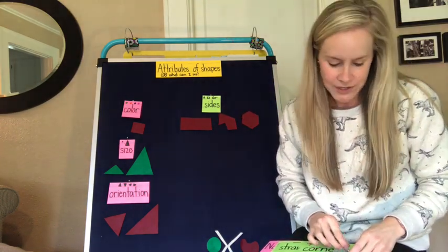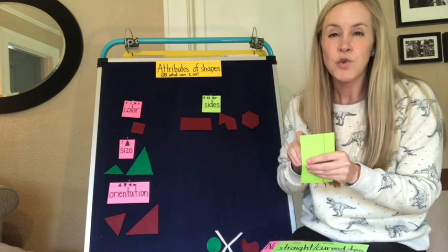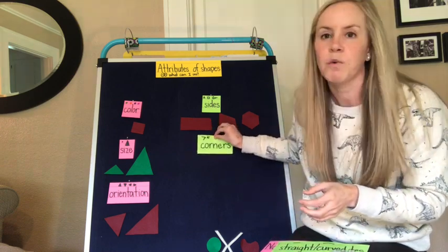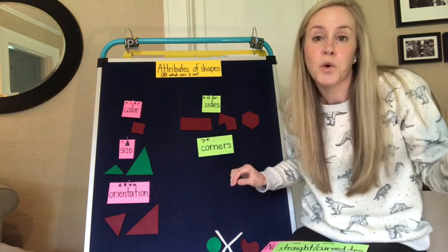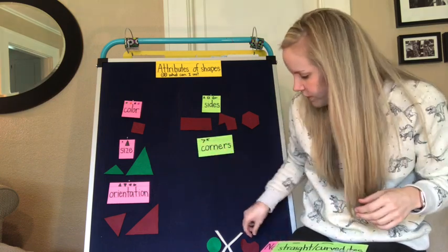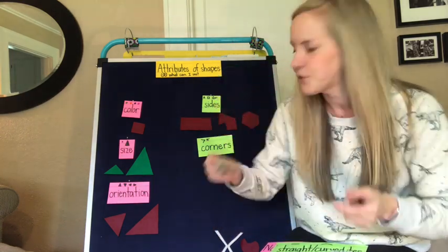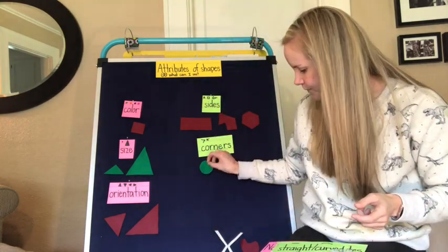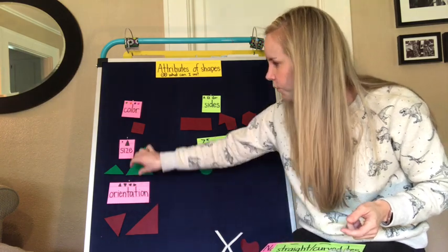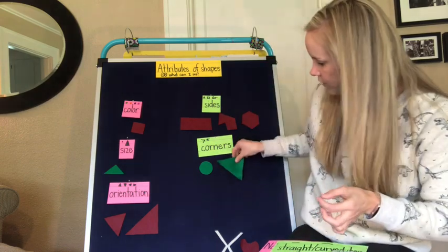Another attribute is corners. Normally corners goes along with sides — however many corners a shape has is how many sides it has too. For instance, this circle has zero corners. This triangle has one, two, three corners.